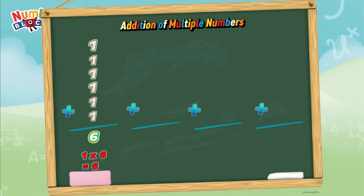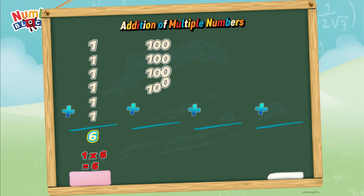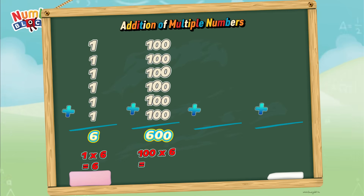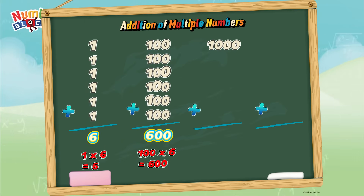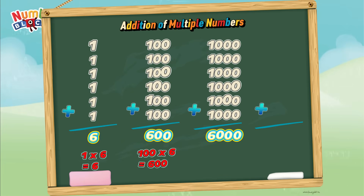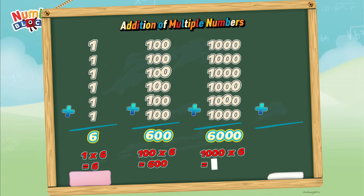Example number 2: 100 plus 100 plus 100 plus 100 plus 100 plus 100 plus 100 equals 600. Example number 3: 1,000 plus 1,000 plus 1,000 plus 1,000 plus 1,000 plus 1,000 equals 6,000. Or, in multiplication, 1,000 multiplied by 6 equals 6,000.